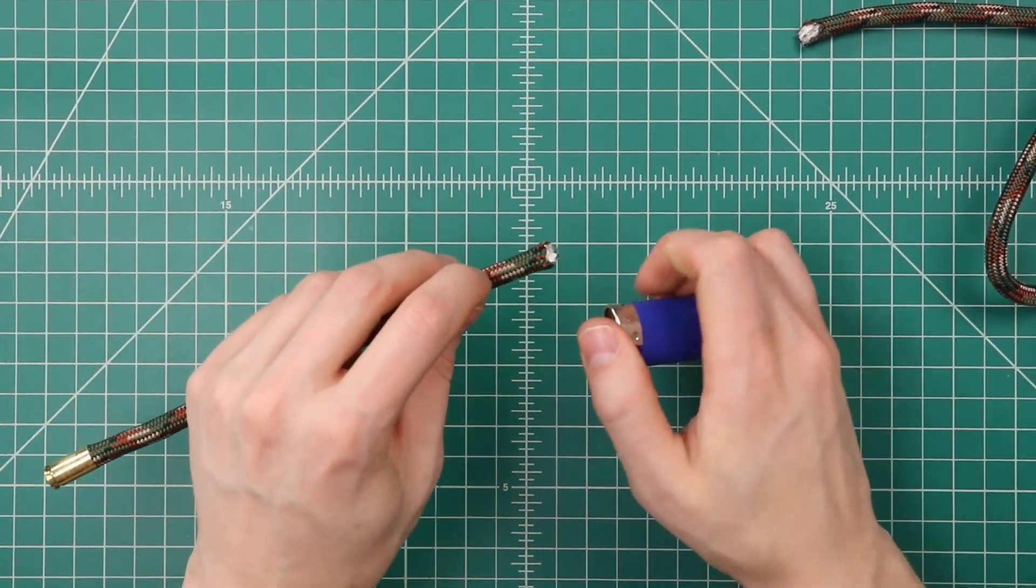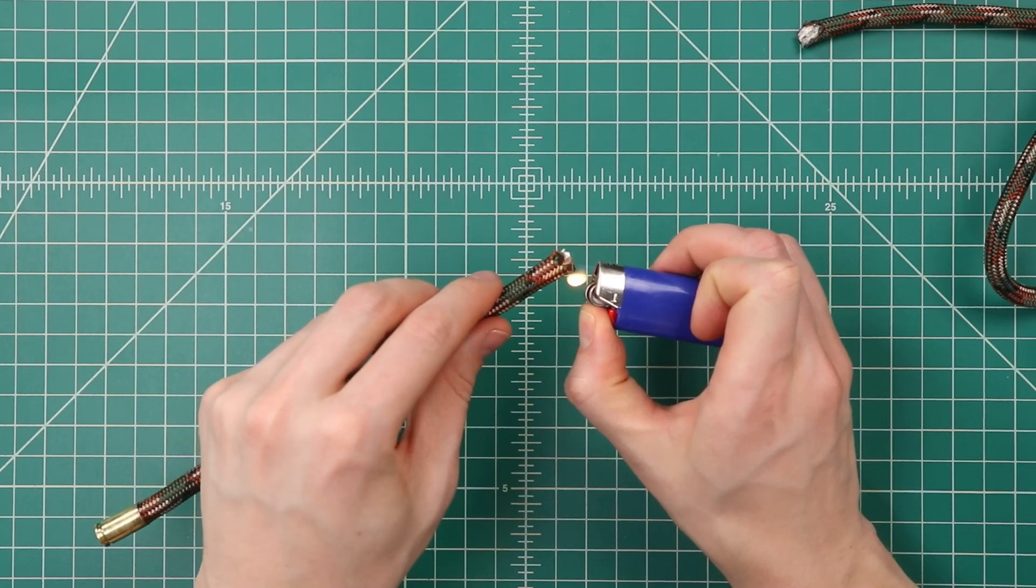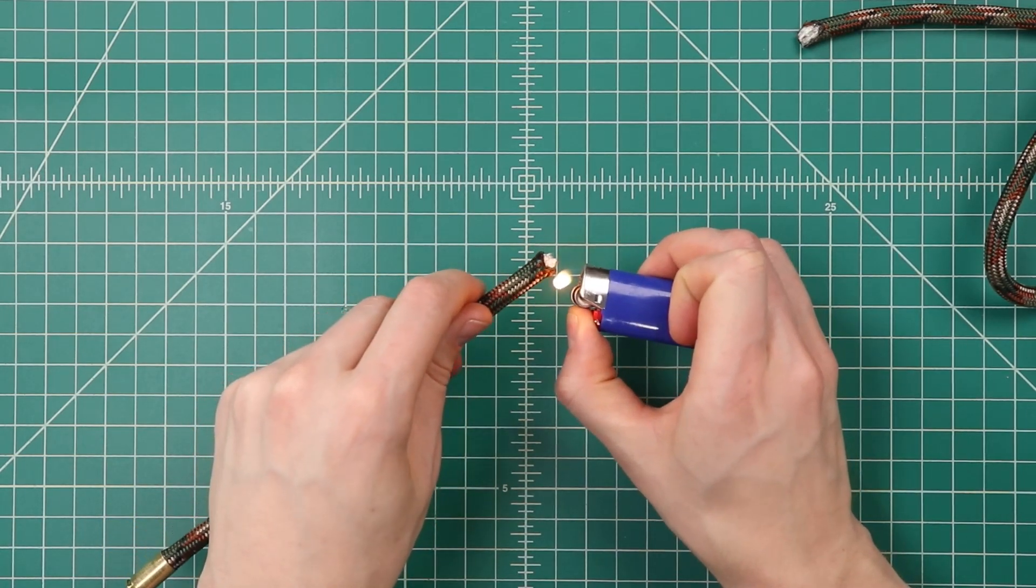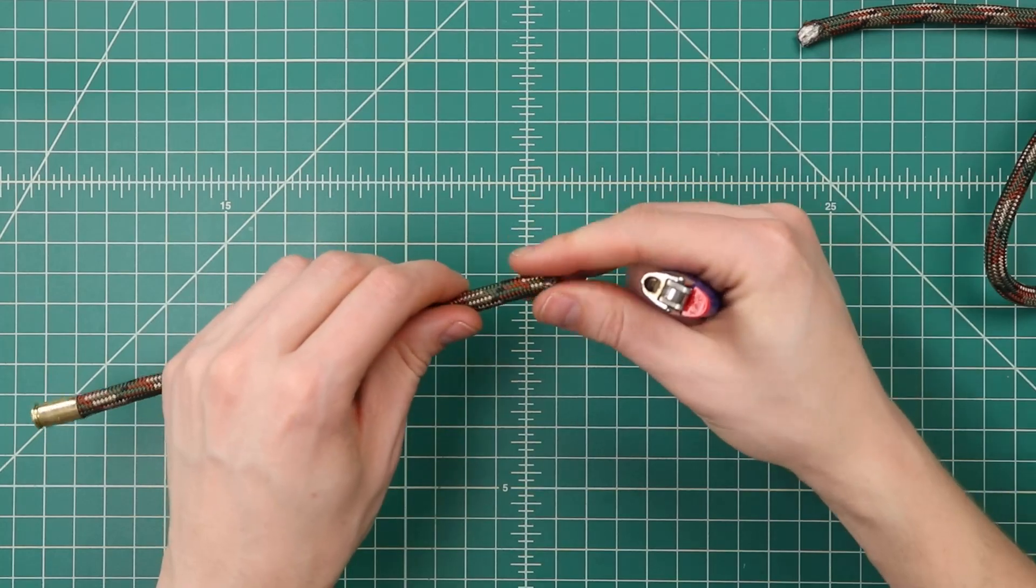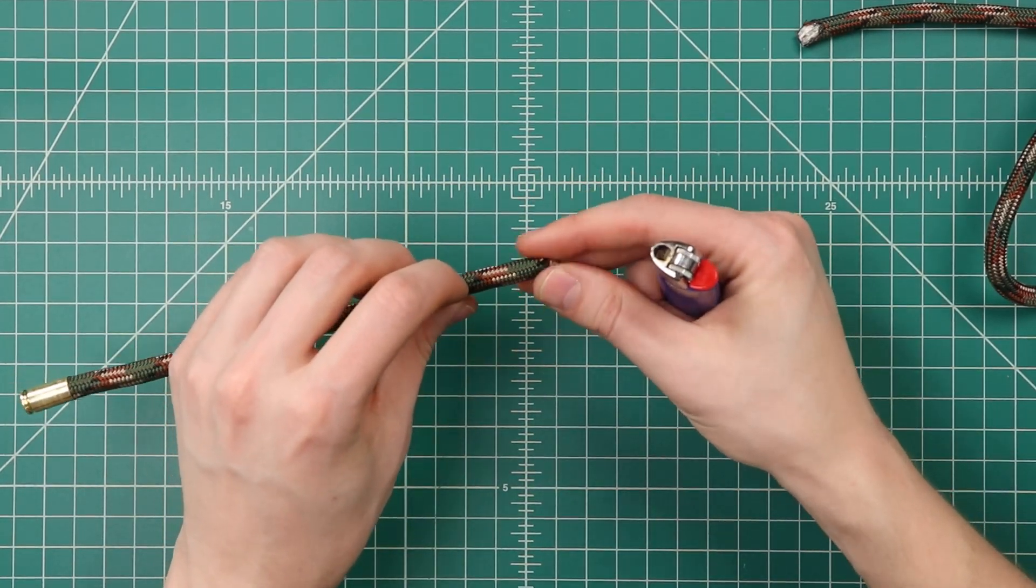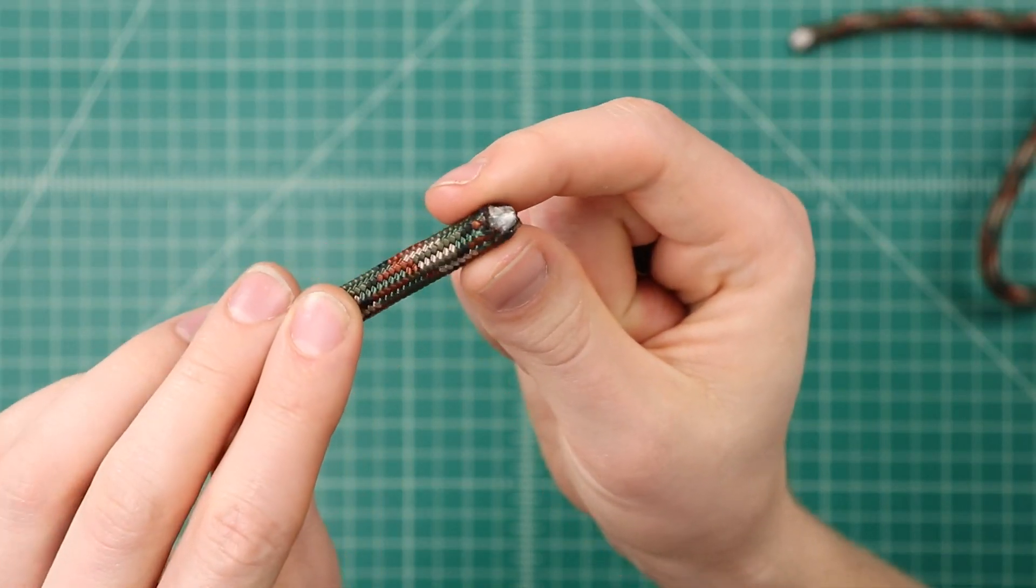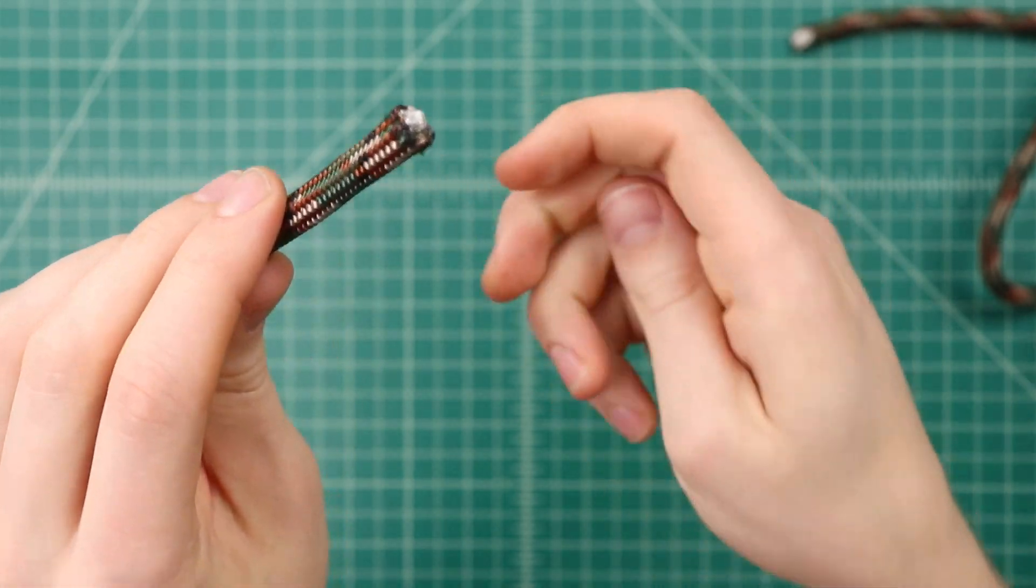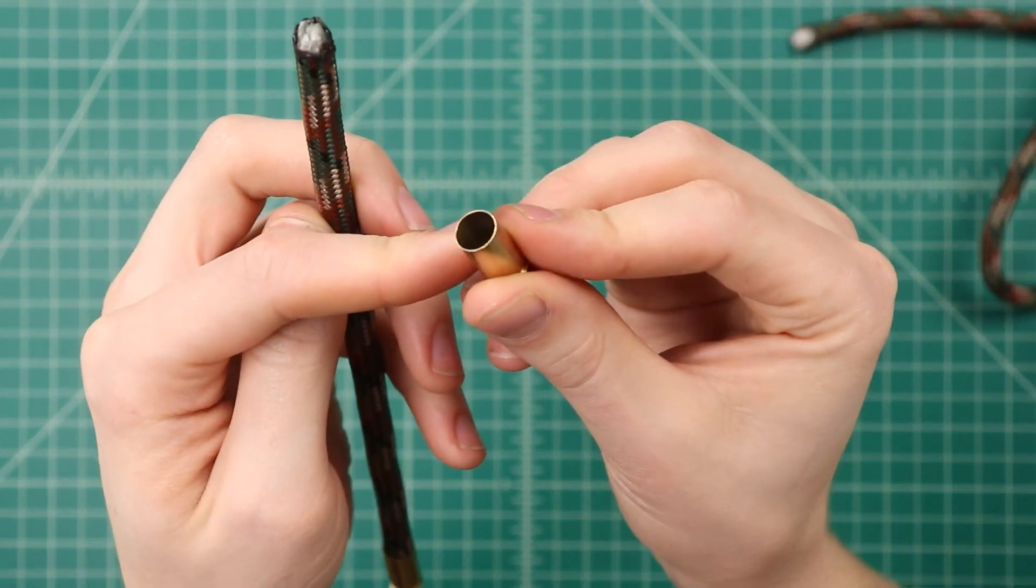Then again, we'll just melt the outside of that a little bit to keep it all in place. Because if they're all frayed, then it's going to be really hard to shove it into that bullet casing. All right, I think that's sufficiently melted.